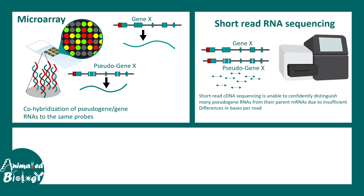Then there is short-read RNA sequencing. In short-read RNA sequencing as well, due to the problem of base pair resolution, one can't find out the differences in base pairs within a short read. So if we look at the fragments, a gene fragment versus a pseudogene fragment would look pretty much the same. It is really difficult to identify them with RNA sequencing because the RNA for both gene X and pseudogene X would have a lot of similarities and very little differences — maybe only on the order of a few base pairs.